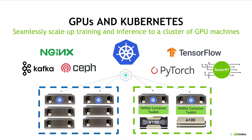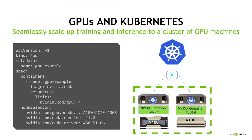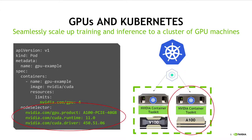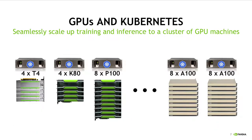First and foremost, supporting GPUs in Kubernetes lets us scale up AI training and inference jobs to a cluster of GPU machines using the same underlying infrastructure we use to deploy all of our CPU-based workloads, such as web servers, databases, streaming data servers, etc. Using the tools we've built as a community, users are able to take a Kubernetes pod spec, specify some number of GPUs, and direct their application to a particular class of GPUs that can meet their workload demands.